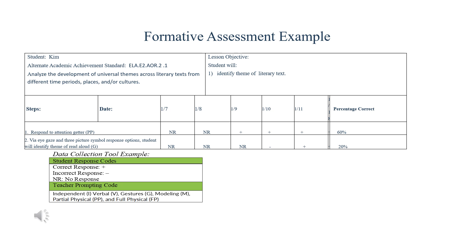Data collected across the week shows 20% correct. One would want to continue into the next week to build on that percentage and show progress. This example can be used for any alternate academic achievement standard and lesson objective.